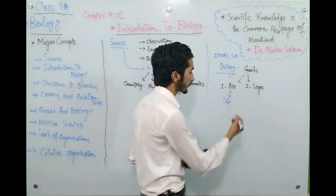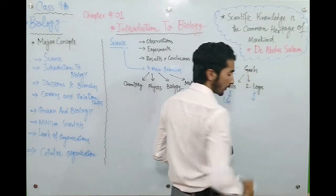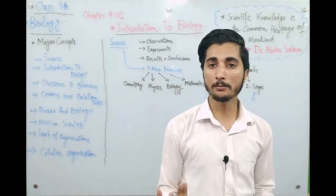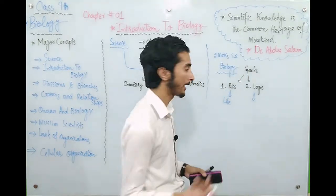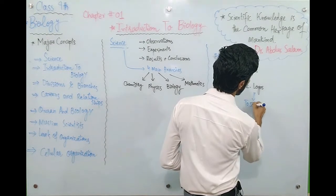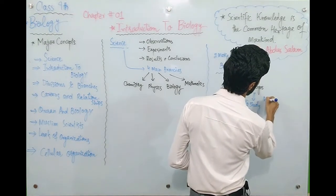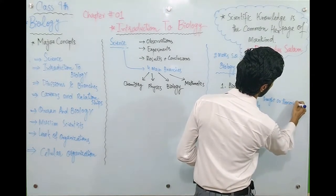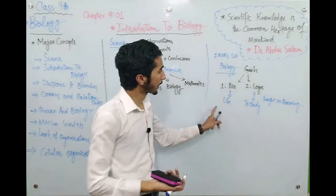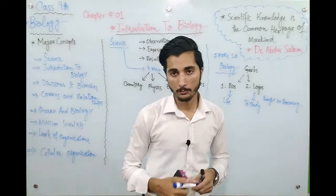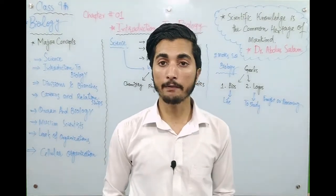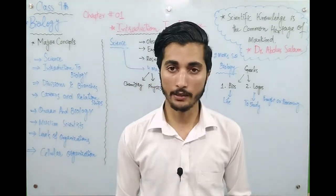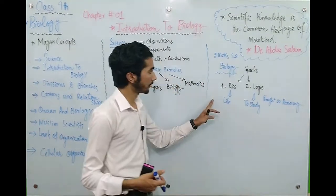The second part is LOGOS. What is LOGOS? LOGOS means thought and reasoning. Reasoning means to search for the reason behind something — what a thing is, how it is. In short, you are going to study thought and reasoning. Biology ki definition: Biology is the branch of science that is the scientific study of life.